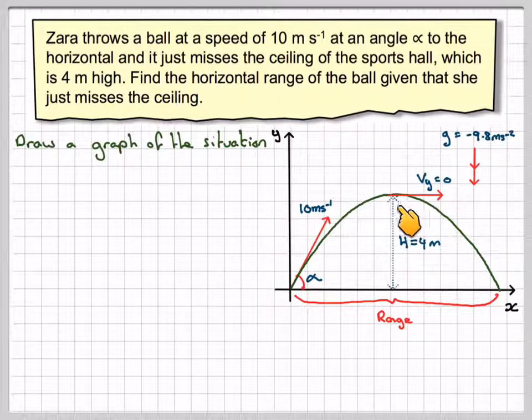At the maximum point here, the Y component of the velocity is equal to 0 and this will be the range that we have to calculate. So what we need to do is find this angle and the range.